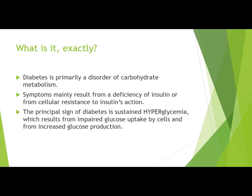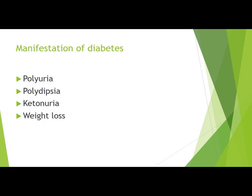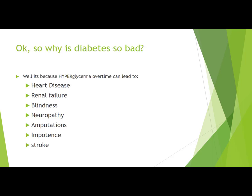Diabetes is primarily a disorder of carbohydrate metabolism. The symptoms mainly result from a deficiency of insulin or from cellular resistance to insulin's actions. The principal sign is sustained hyperglycemia, or increased blood sugar levels, which results from impaired glucose uptake by cells and increased glucose production. Manifestations include polyuria, polydipsia, ketonuria, and weight loss.